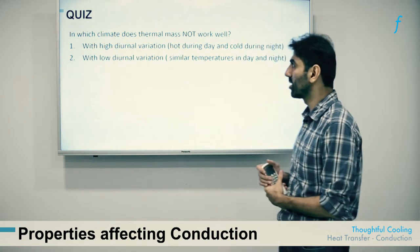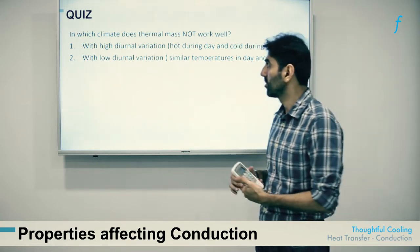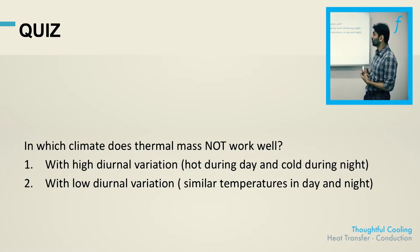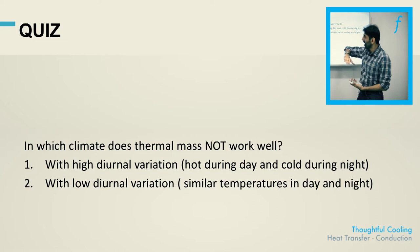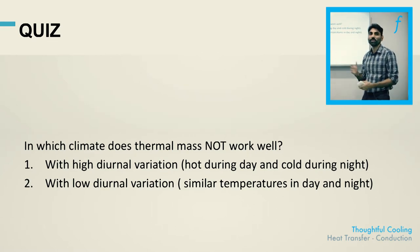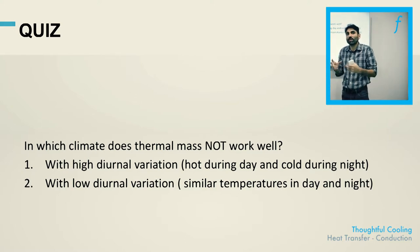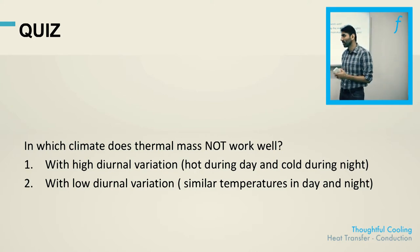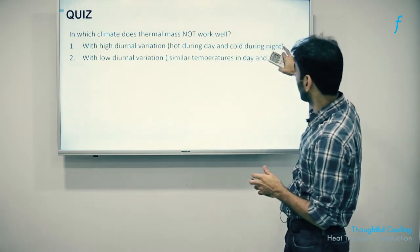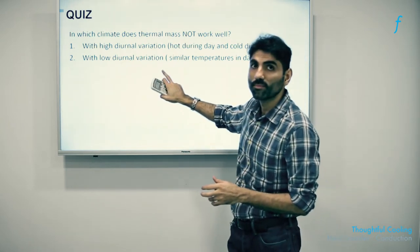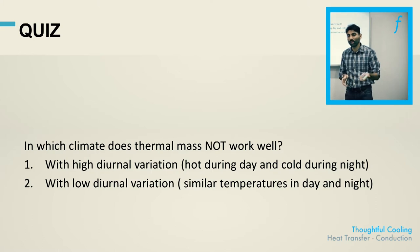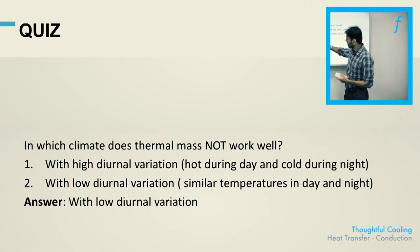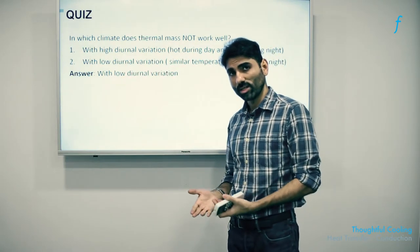Here is a quick quiz: in which climate does thermal mass not work well? Is it a climate with high diurnal variation — where daytime and nighttime temperatures are sufficiently distinct — or a region with low diurnal variation where night and daytime temperatures are relatively similar? The answer is low diurnal variation, such as coastal regions like Mumbai or Chennai. The reason is that if you have high thermal mass and the wall has been baked by the sun throughout the day, but the nighttime temperature has not dropped sufficiently below the wall temperature, all that heat remains stored in the wall and cannot be lost naturally to the surroundings.